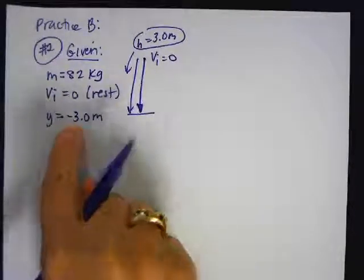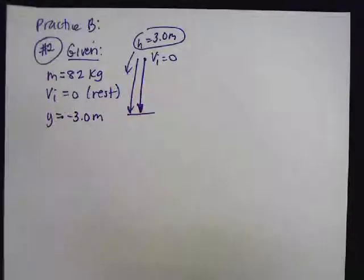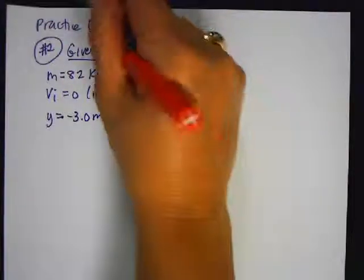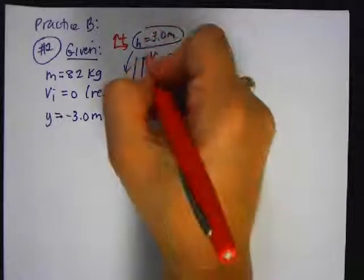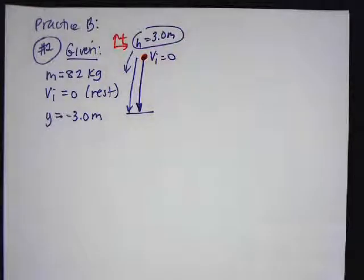Why is it negative? Because I'm measuring from here down. And remember, we're using our standard Cartesian sign convention, and our frame of reference is going to be right here, where motion begins. Remember, we're dealing with vector quantities.